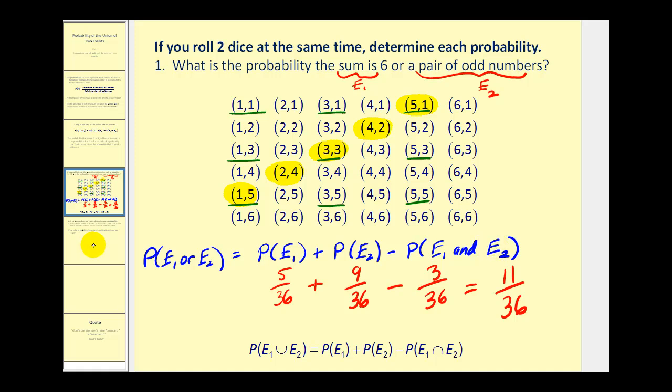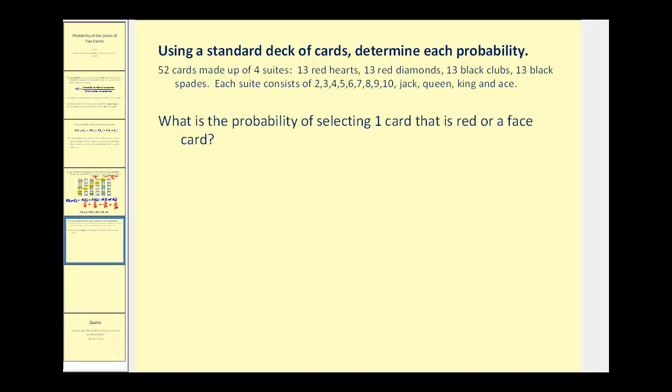Let's take a look at one more example of this. We're going to use a standard deck of cards for this question. We want to know what the probability of selecting one card that is red or a face card. So we'll call the red event one, and we'll call the face card event two. So the probability of event one or event two, remember, or means union, is going to equal the probability of event one plus the probability of event two minus the probability of event one and event two.